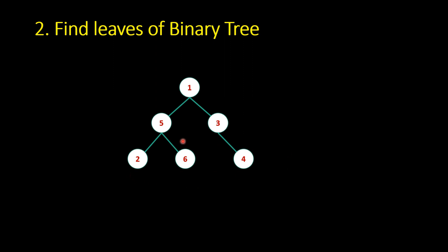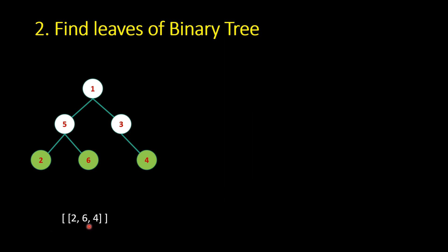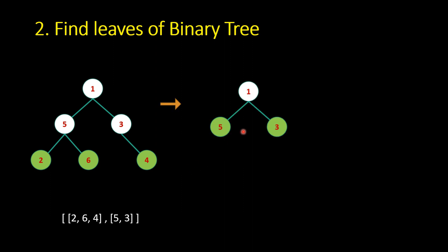The next problem is finding the leaves of a binary tree — not simply finding them, but adding them to the result and removing those leaves. The leaves are 2, 6, and 4, so you add that vector to the result and remove those nodes. Now the leaf nodes are 5 and 3, so you add those and remove them. Finally one node remains, you add it to the result, and return.